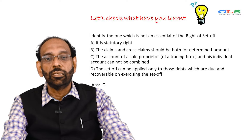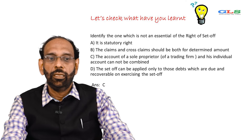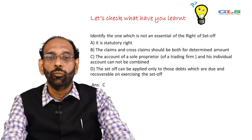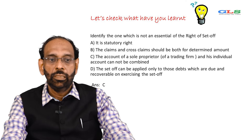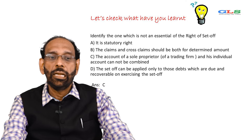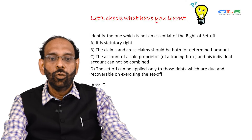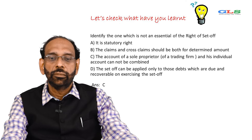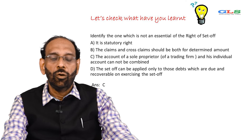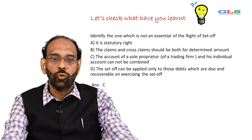Let's check what we learned. Identify the one which is not an essential of the right of set-off: A — it is a statutory right; B — the claims and cross claims should both be for a determined amount; C — the account of a sole proprietor of a trading firm and his individual account cannot be combined; D — set-off can be applied only to those debts which are due and recoverable. The answer is C.